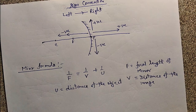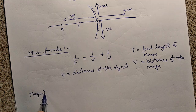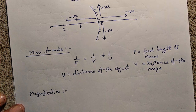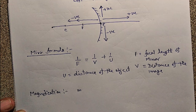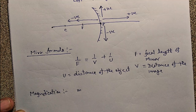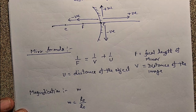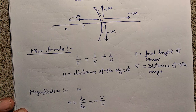This formula will be used in solving numericals. Next is magnification. Magnification is of two types: linear and angular. Here we study only linear magnification. Magnification is denoted by M and is defined as the ratio of height of the image to the height of the object: M equals HI upon HO, which is also equal to minus V upon U.